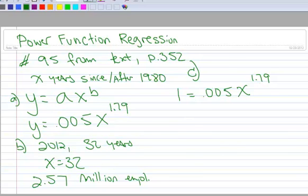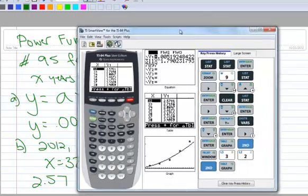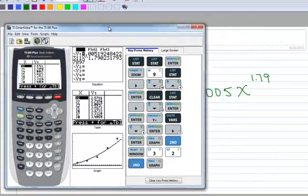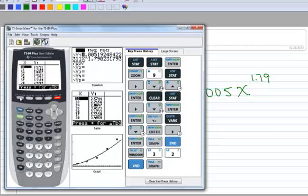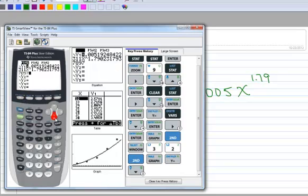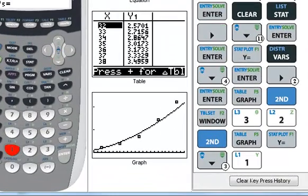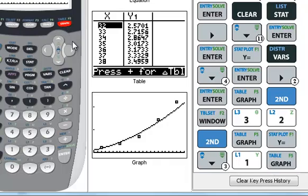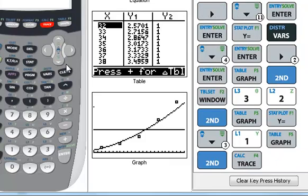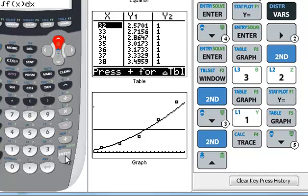All right, so to use your calculator to solve it, go to y equals, arrow down to y sub 2, and type in 1 for 1 million. Press graph, and where they intersect, that's going to be the solution. Second, trace, go down to intersect, enter.